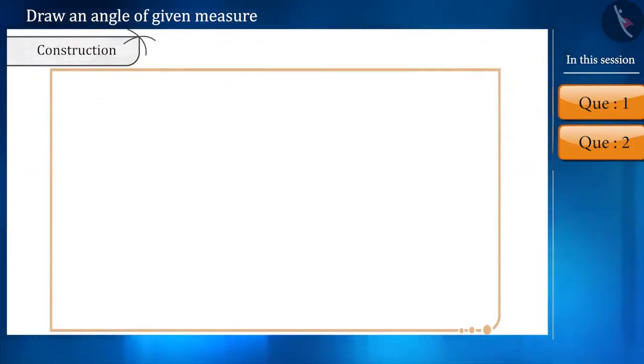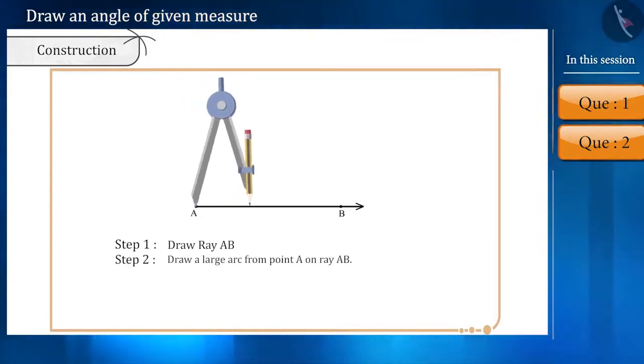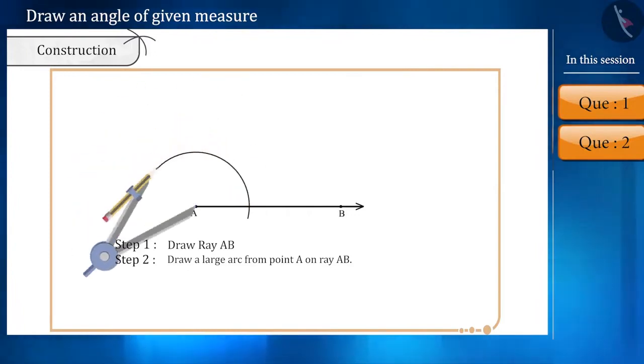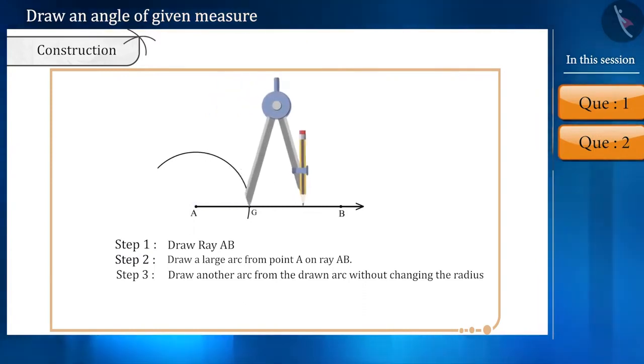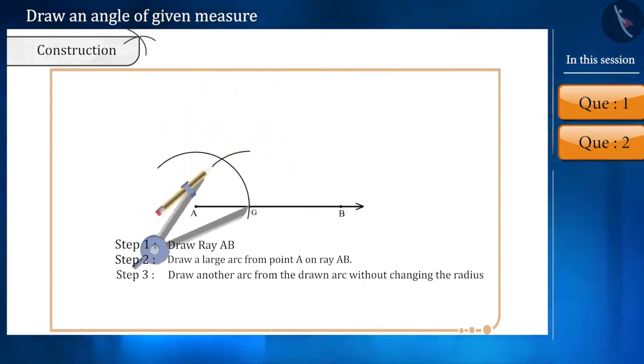Now, we will see these steps in brief. Draw a ray AB. With the help of a compass taking a radius, draw a large arc from the vertex A in such a way that it intersects the ray AB. Now, without changing the radius, from this point of intersection, draw an arc in such a way that it intersects the arc drawn from point A at D.